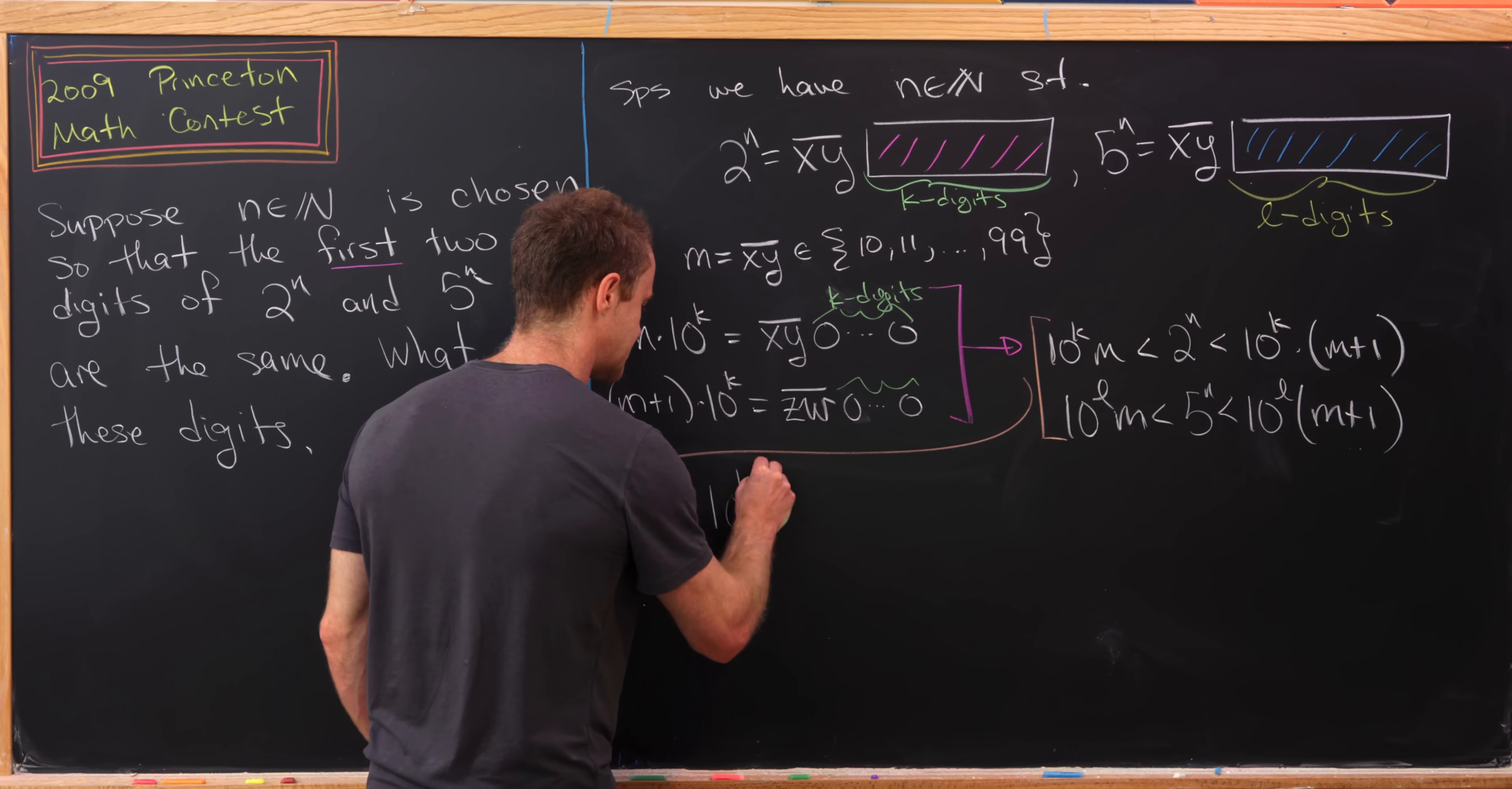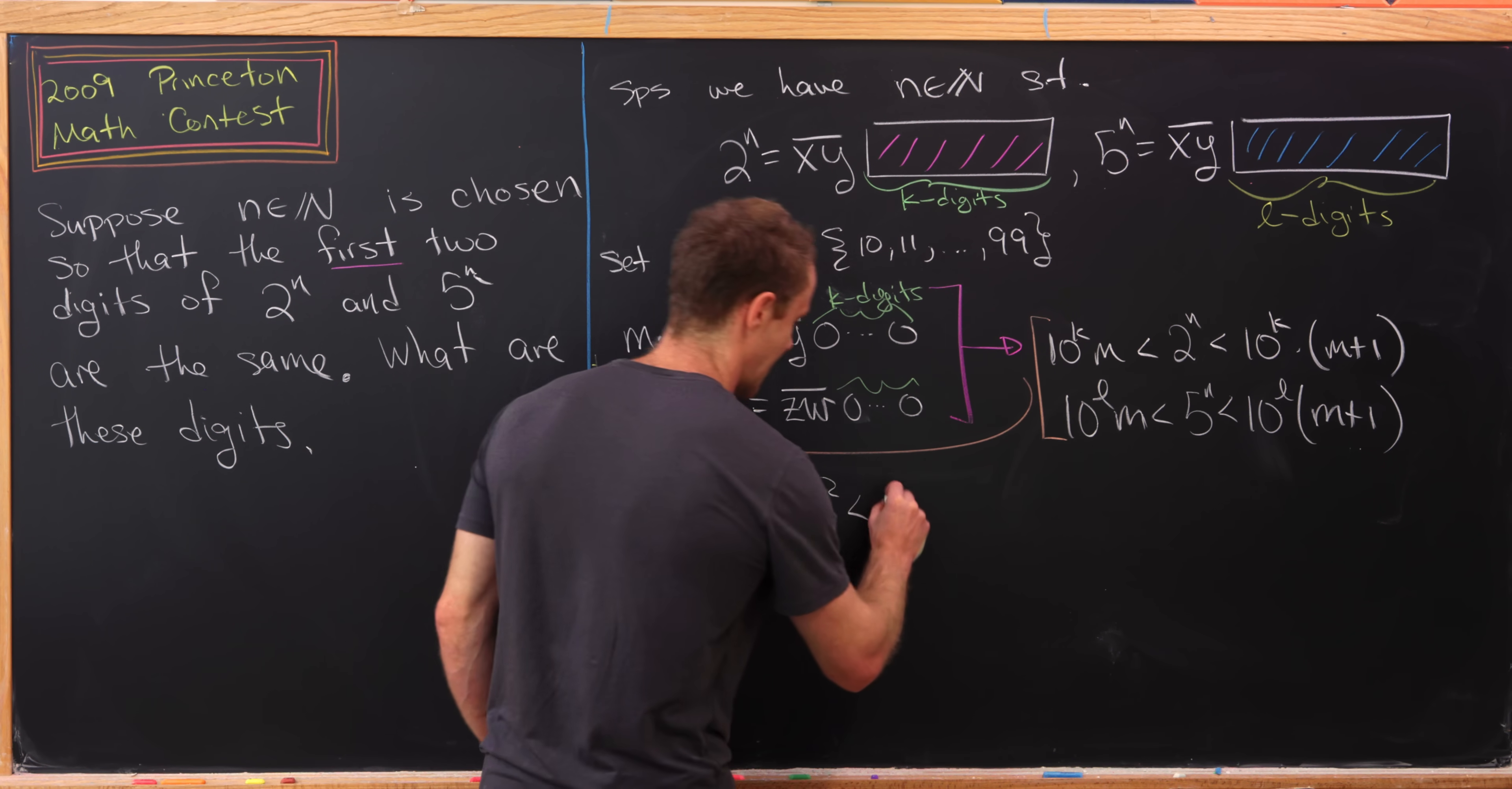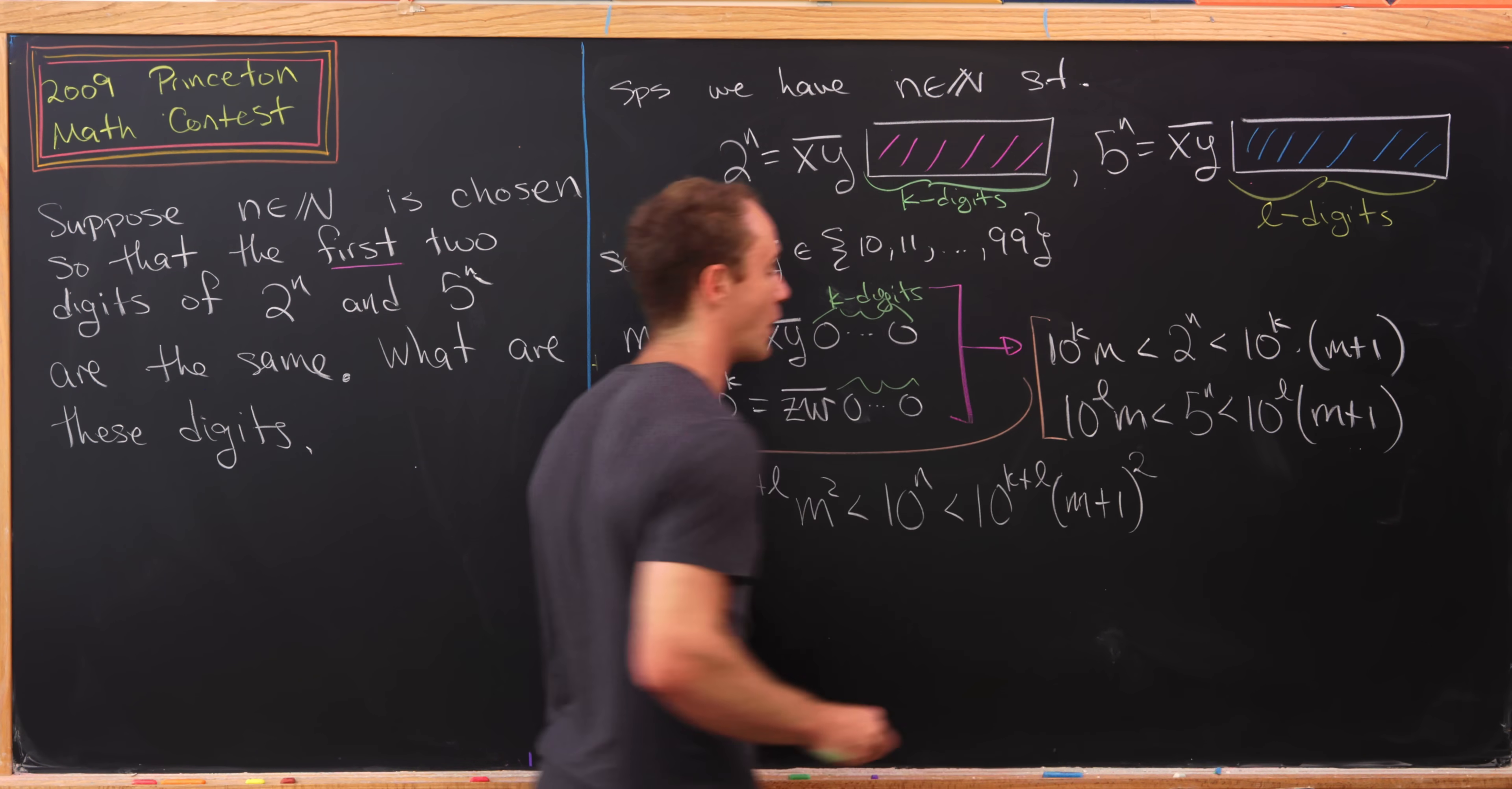That'll give us 10^(k+l) times m^2 is less than 10^n, which in turn is less than 10^(k+l) times (m+1)^2.